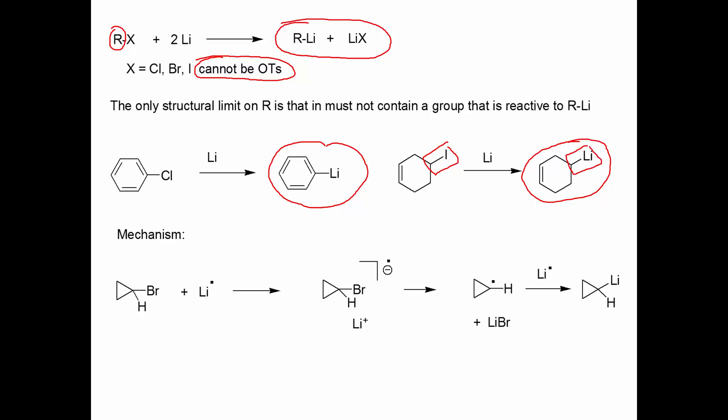Here's the mechanism — I don't think I'd ever ask this on an exam, but basically we're transferring an electron to one of the empty d-orbitals that bromine has available, or in some cases a sigma antibonding orbital. This makes the radical anion. The radical anion can now lose bromine, generating the free radical, which reacts with another mole of lithium. Notice that we need two moles of lithium to make the organolithium reagent.